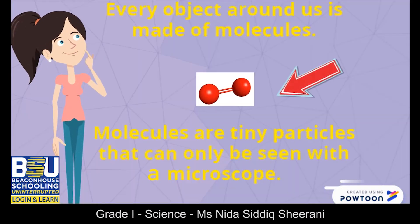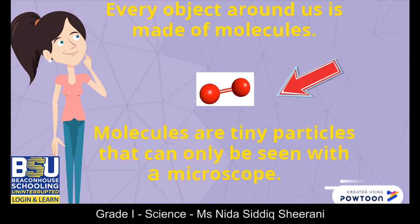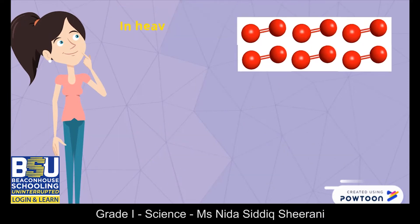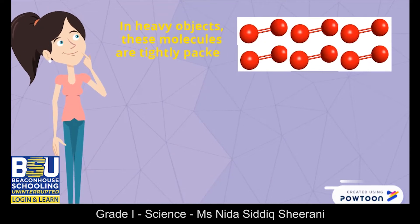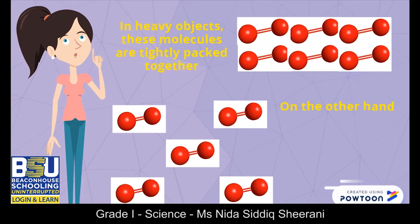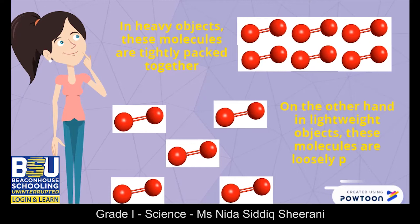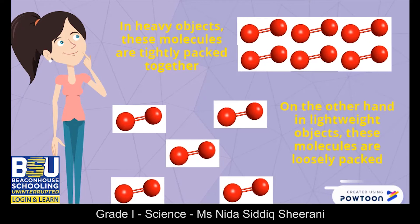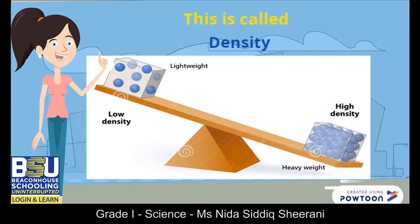Every object around us is made of molecules. Now you must be thinking, what is a molecule? Molecules are tiny particles that can only be seen with a microscope. In heavy objects, these molecules are tightly packed together. On the other hand, in lightweight objects, these molecules are loosely packed. This is called density. Lightweight objects have low density and heavyweight objects have high density.